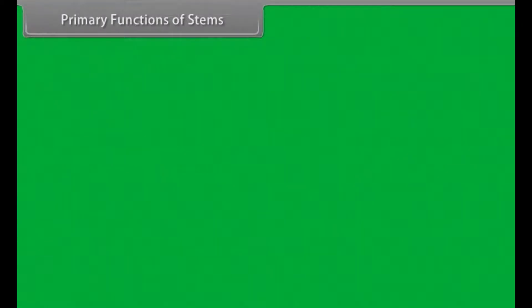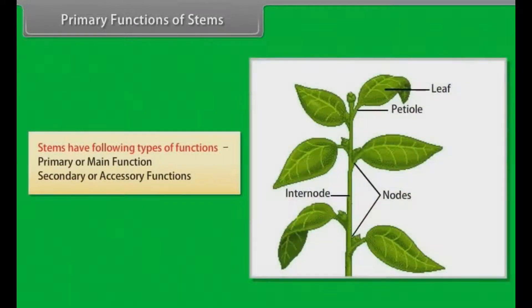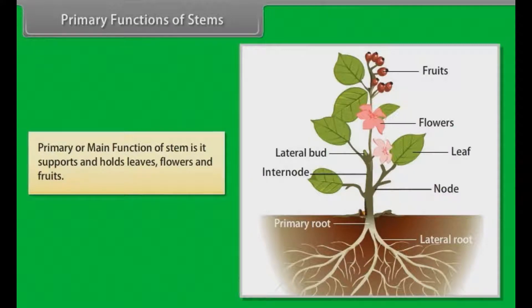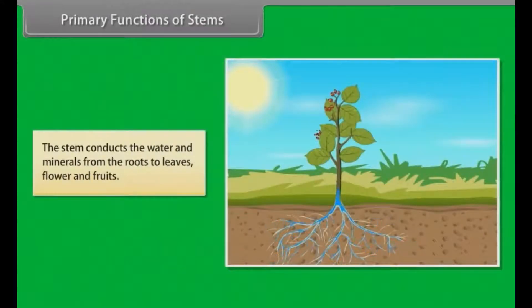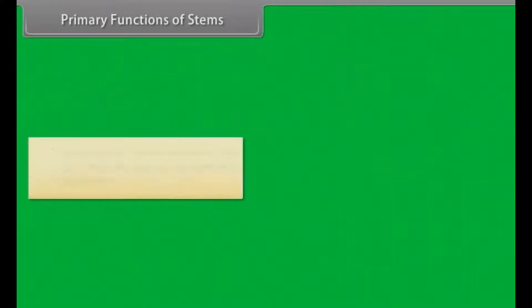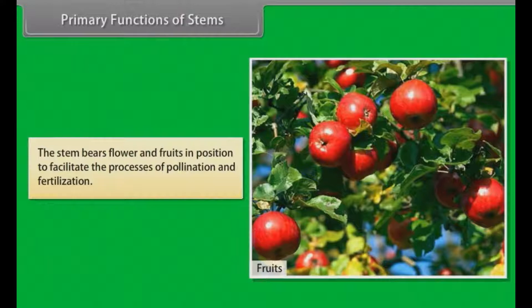Stems have two types of functions: primary or main functions, and secondary or accessory functions. The primary functions of the stem are: it supports and holds leaves, flowers, and fruits; it conducts water and minerals from the roots to leaves, flowers, and fruits; the leaves are borne on the stem in such a fashion that they are able to carry on important functions efficiently, like receiving sunlight and gaseous exchange; and the stem bears flowers and fruits in position to facilitate the processes of pollination and fertilization.